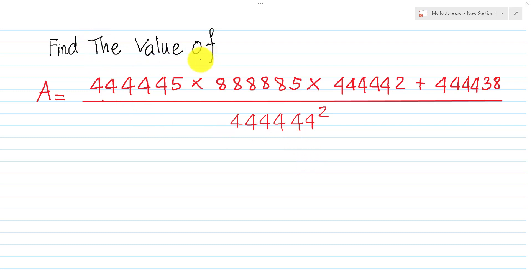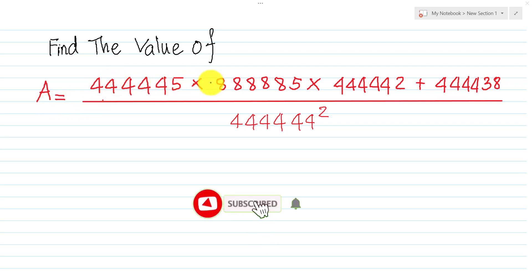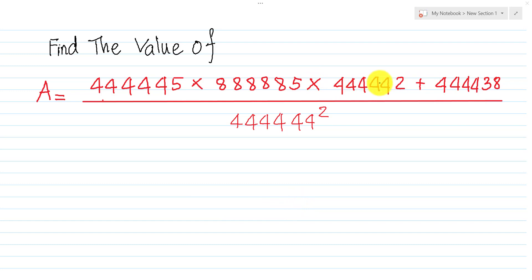Find the values of the expression: 444445 multiplied by 888885, multiplied by 444442 plus 444438, all over 44444, all squared.